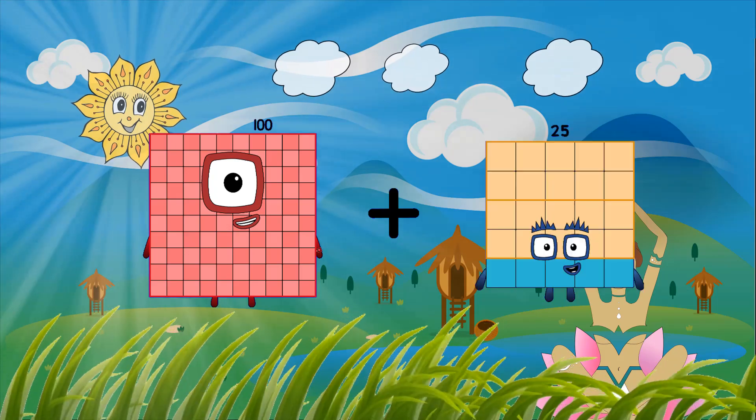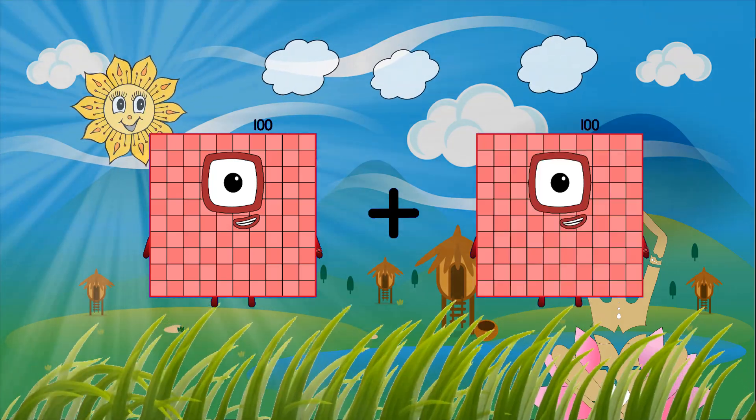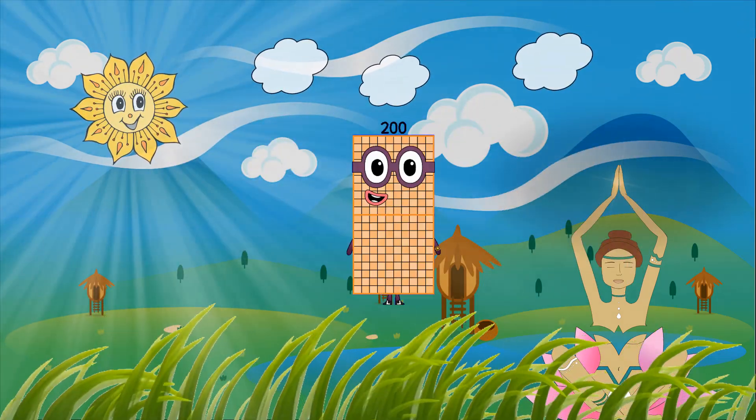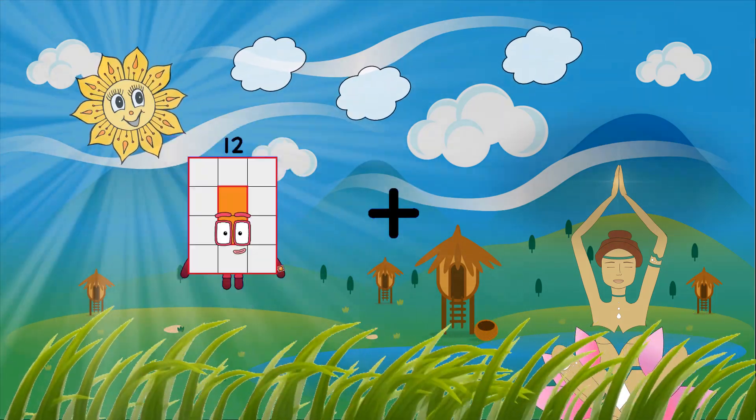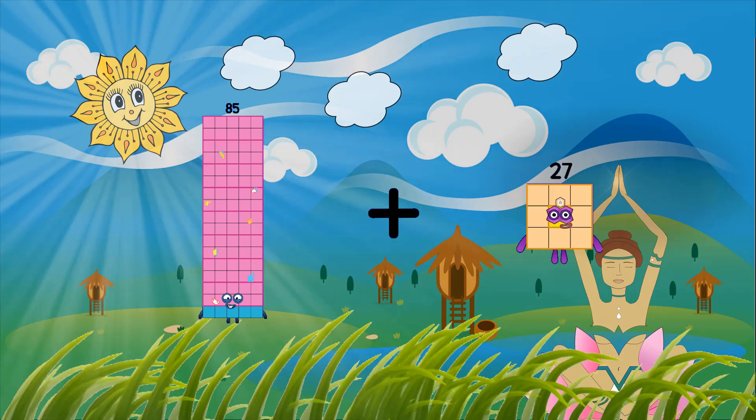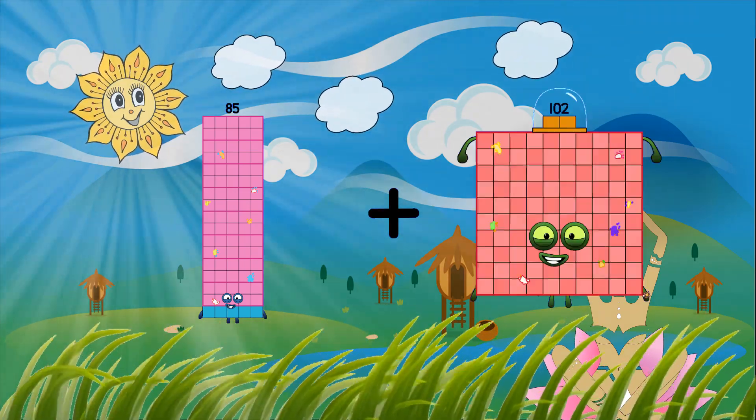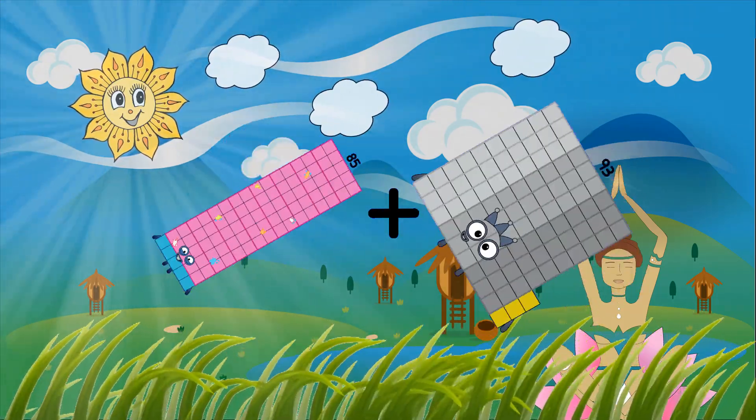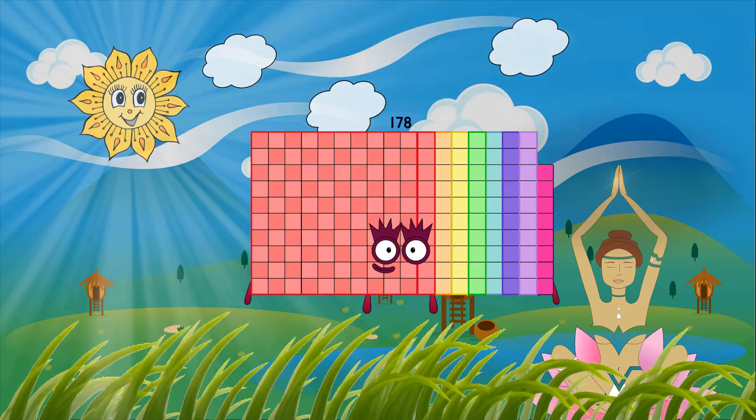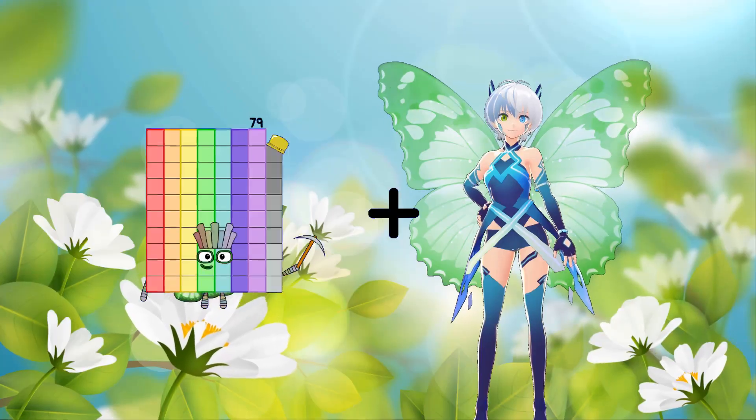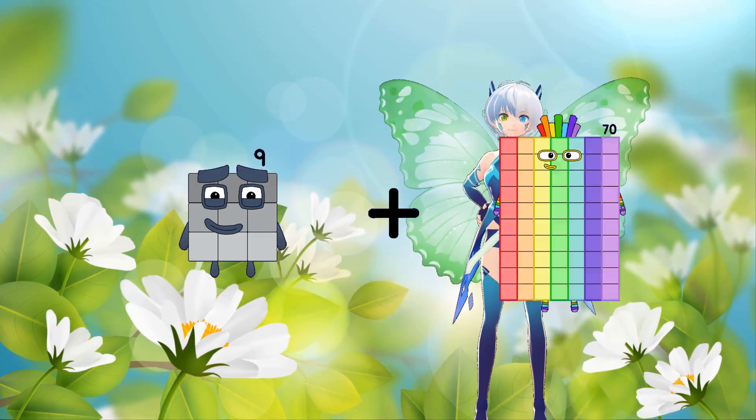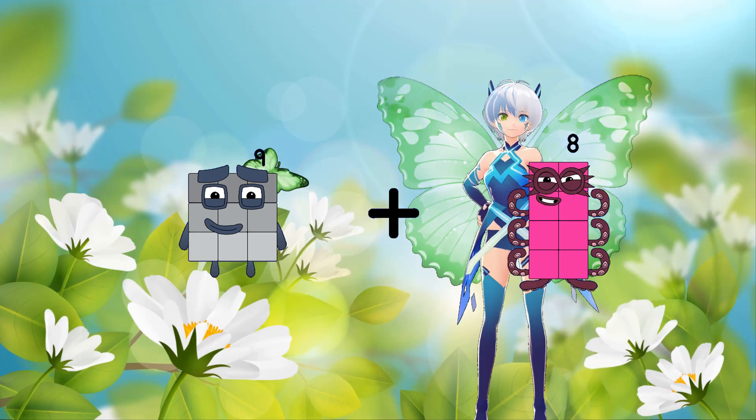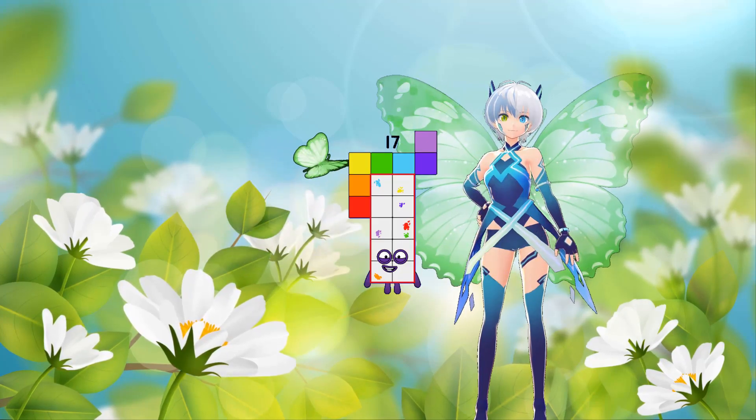100 plus 100 equals 200. 85 plus 93 equals 178. 9 plus 8 equals 17.